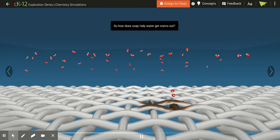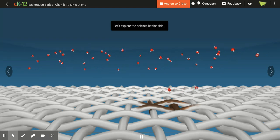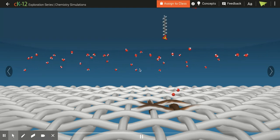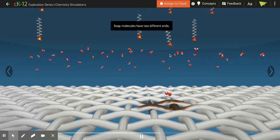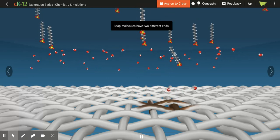So how does soap help water get the stains out? We have the oily stain, and then we have the polar water. Soap molecules have two different ends. Here's the soap.